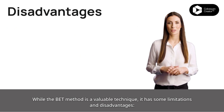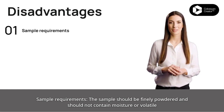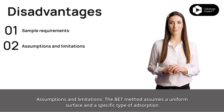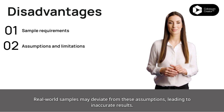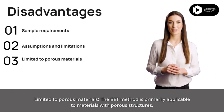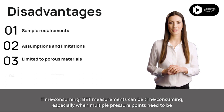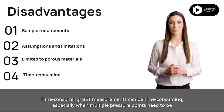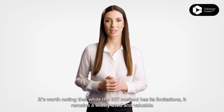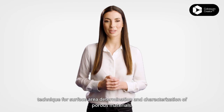While the BET method is a valuable technique, it has some limitations and disadvantages. Sample requirements: the sample should be finely powdered and should not contain moisture or volatile components that could interfere with the adsorption process. The BET method assumes a uniform surface and a specific type of adsorption behavior; real-world samples may deviate from these assumptions, leading to inaccurate results. The method is primarily applicable to materials with porous structures, making it unsuitable for non-porous materials. BET measurements can also be time-consuming, especially when multiple pressure points need to be measured to construct the adsorption isotherm. Nevertheless, it remains a widely used and valuable technique for surface area determination and characterization of porous materials.